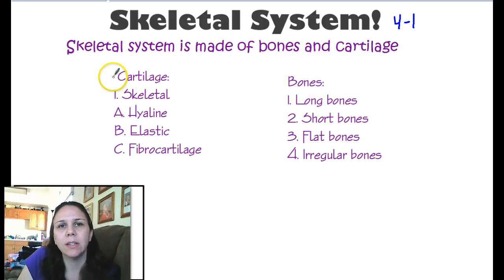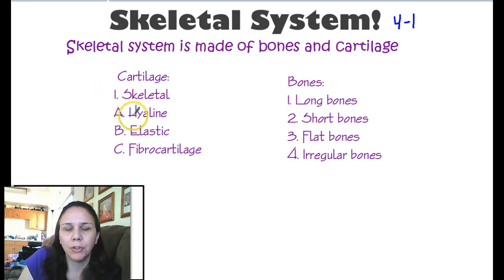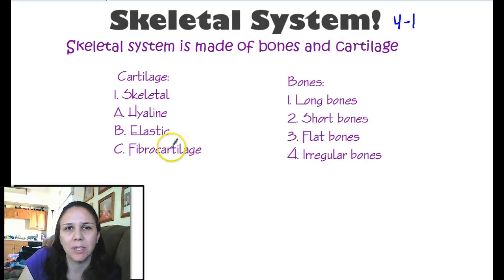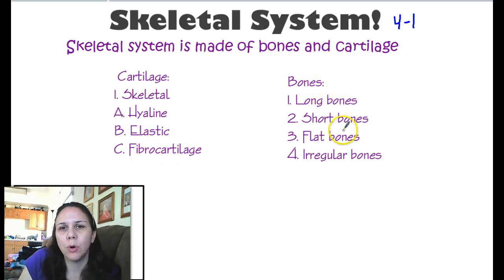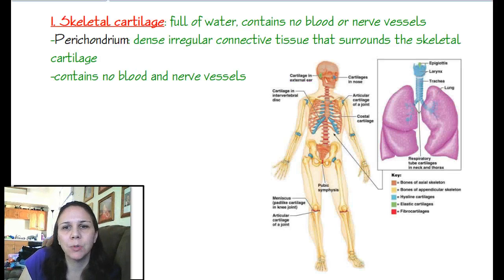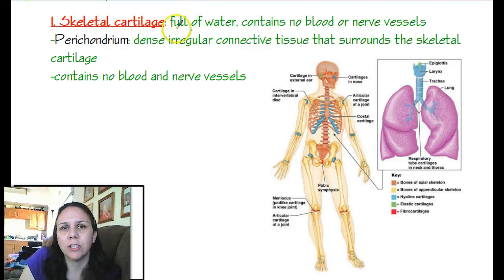The cartilage we find we typically refer to as skeletal cartilage, because it's attached to or in reference to the skeleton. There are three different types: hyaline, elastic, and fibrocartilage, which is the same type we saw in the tissues chapter. Skeletal cartilage is full of water, which makes it really good for absorbing shock and pressure.